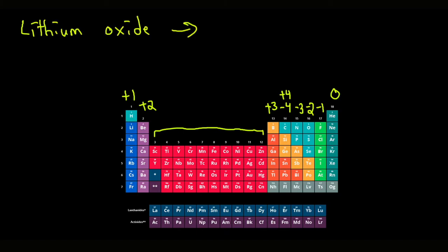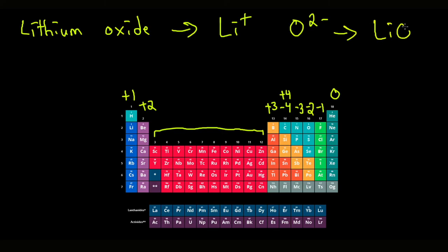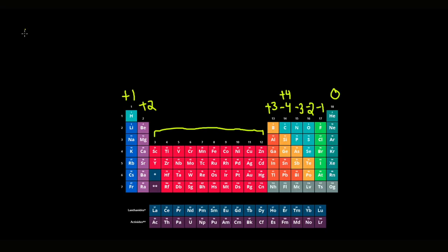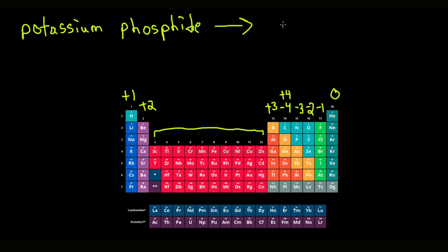For potassium phosphide: potassium is K plus and phosphorus is P3 minus. When we crisscross, we get K3P.